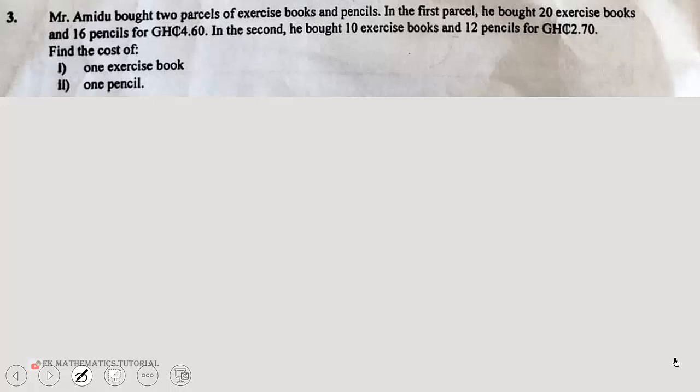Mr. Amidou bought two parcels of exercise books and pencils. In the first parcel, he bought 20 exercise books and 16 pencils for 4.60 cedis. In the second, he bought 10 exercise books and 12 pencils for 2.70 cedis. Find the cost of one exercise book and one pencil.